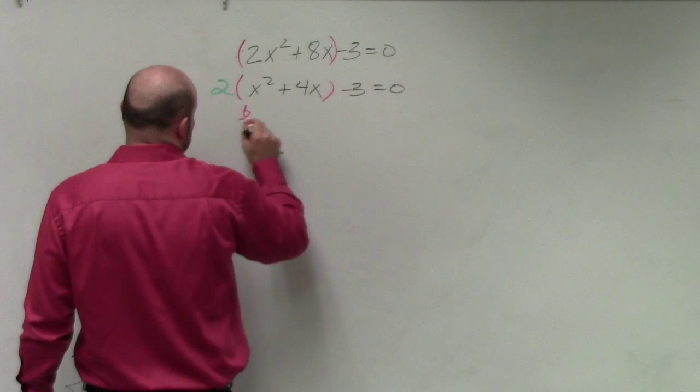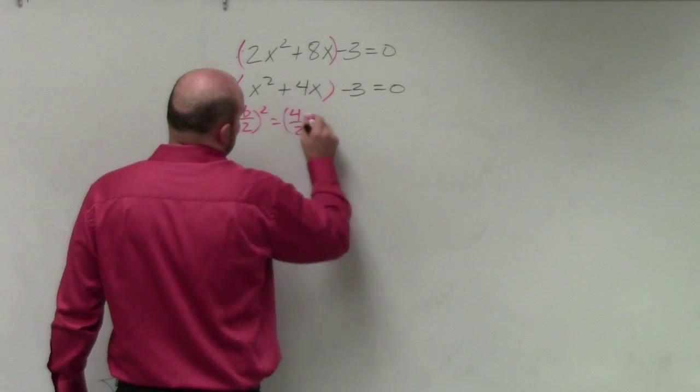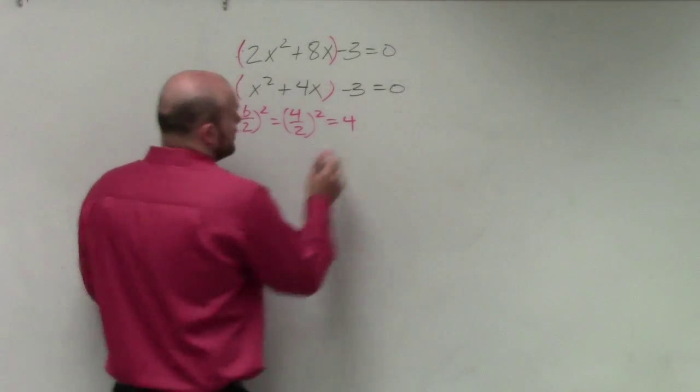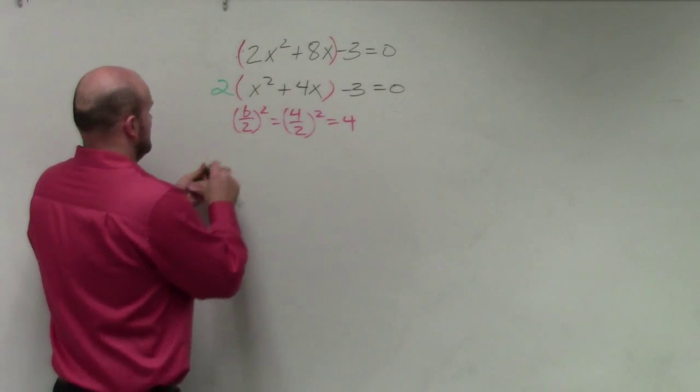Then we do b divided by 2 squared. 4 divided by 2 squared. 4 divided by 2 is 2. 2 squared is equal to 4. Add inside the parentheses. Subtract outside the parentheses.